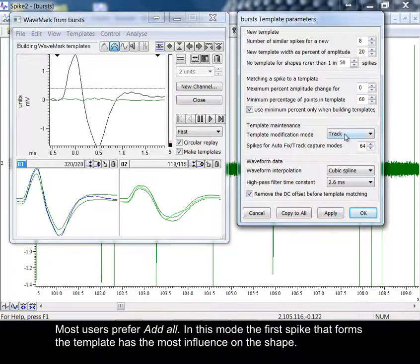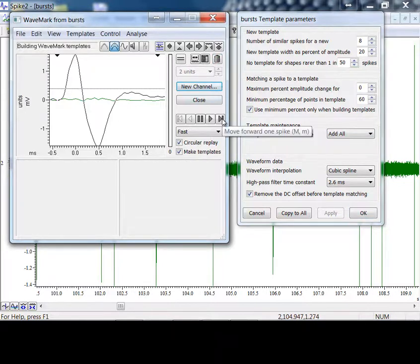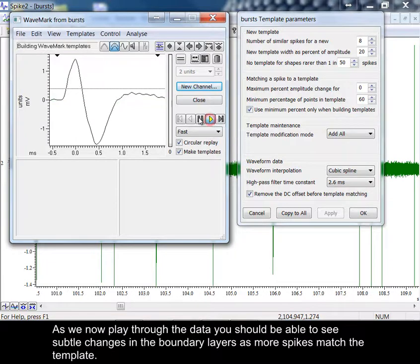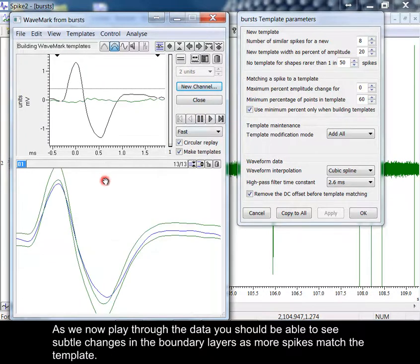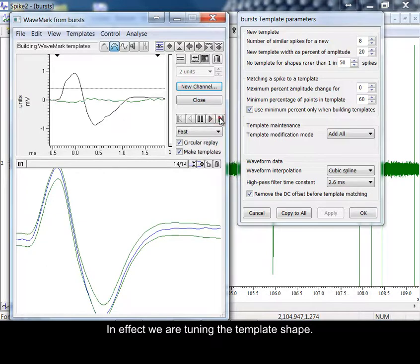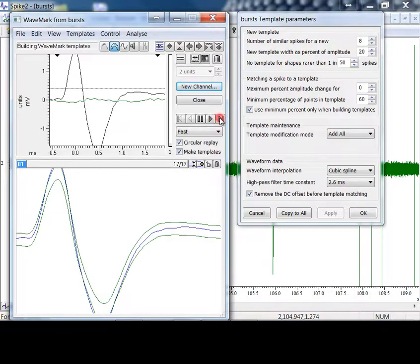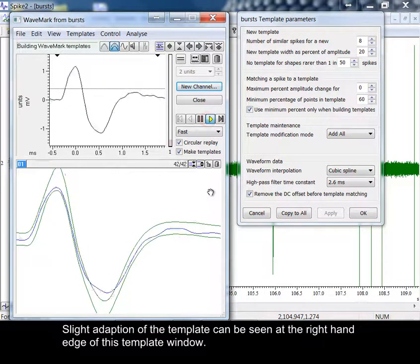Most users prefer add all. In this mode, the first spike that forms the template has the most influence on the shape. As we now play through the data, you should be able to see subtle changes in the boundary layers as more spikes match the template. In effect, we are tuning the template shape.